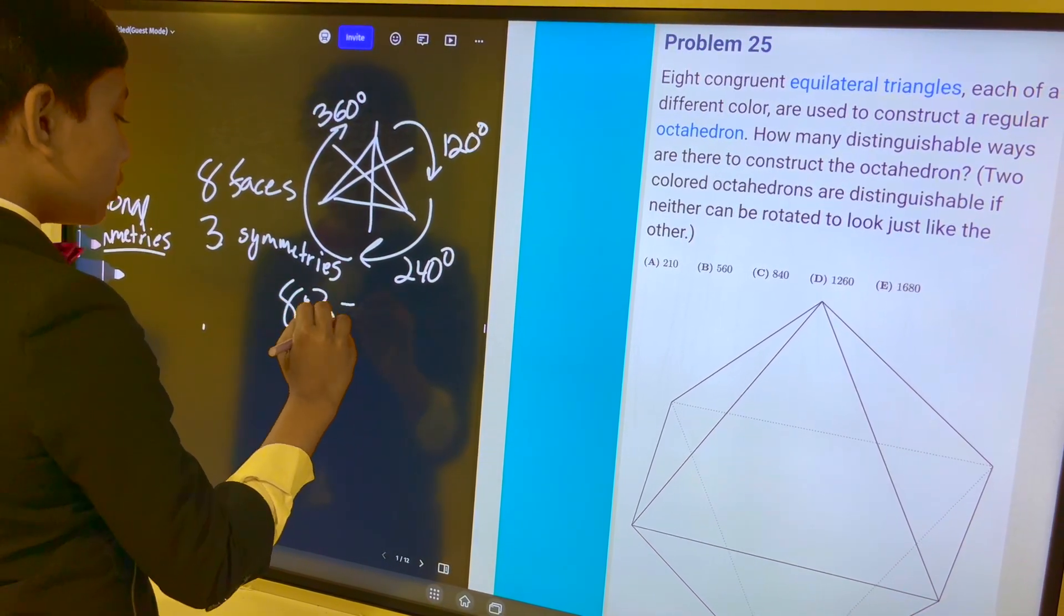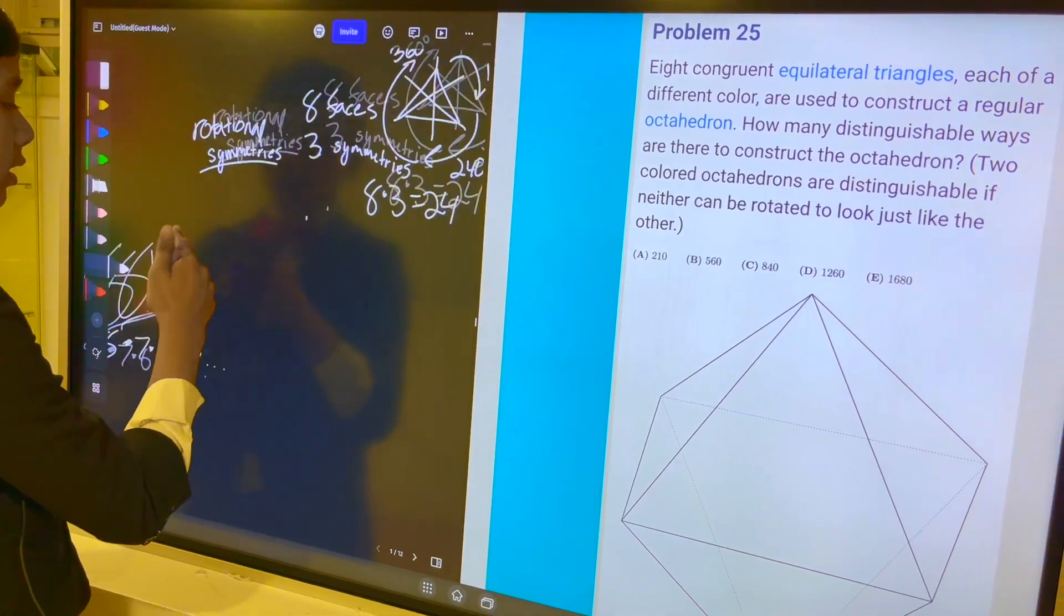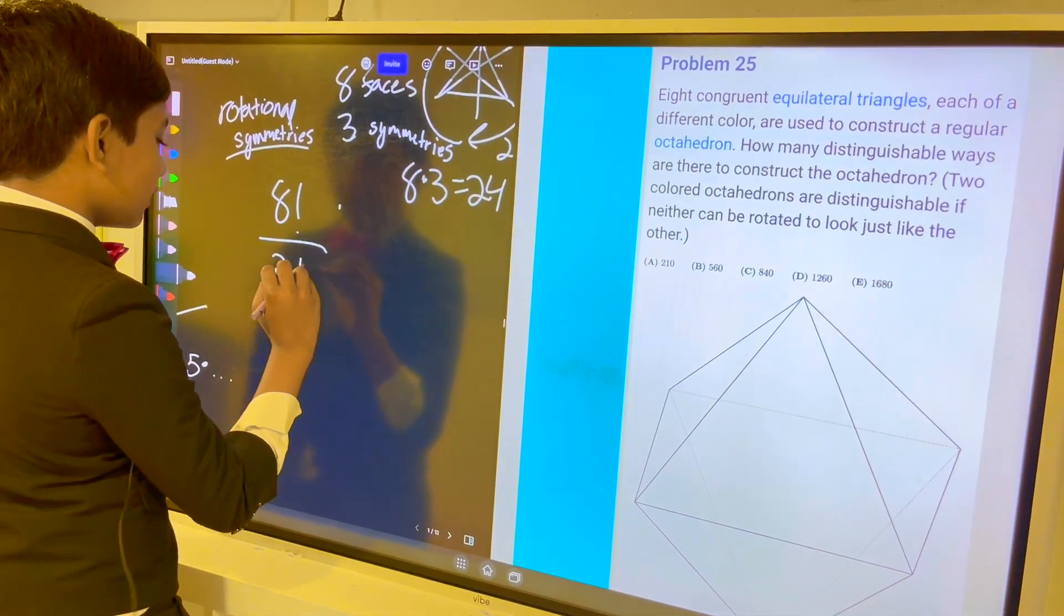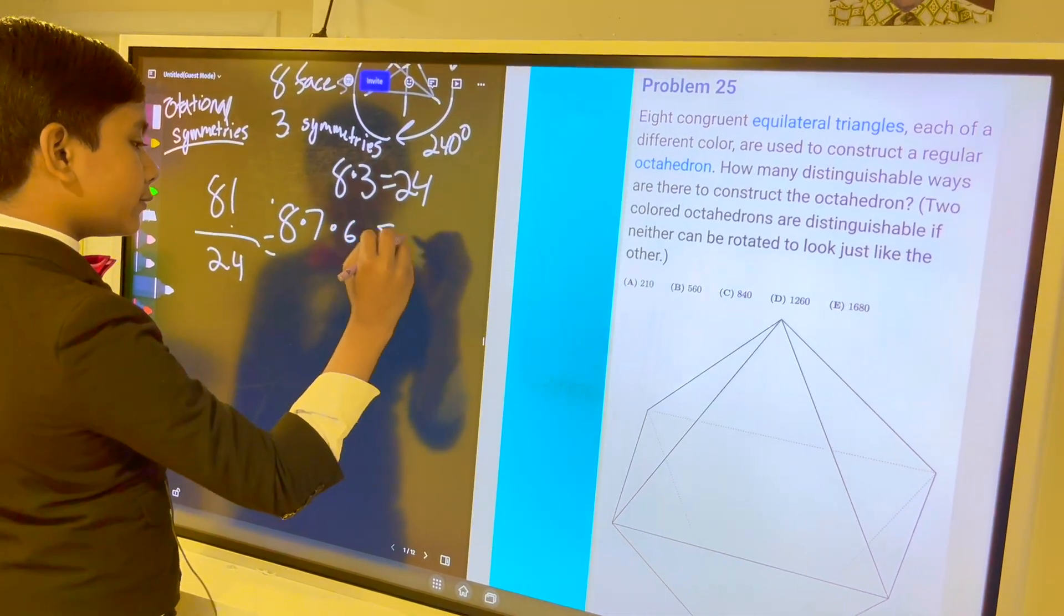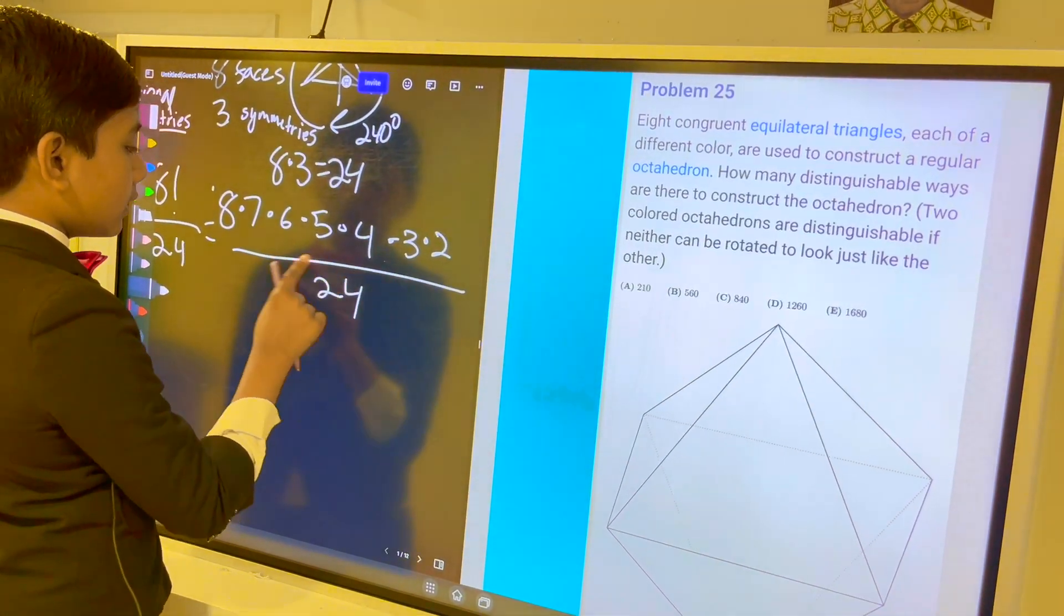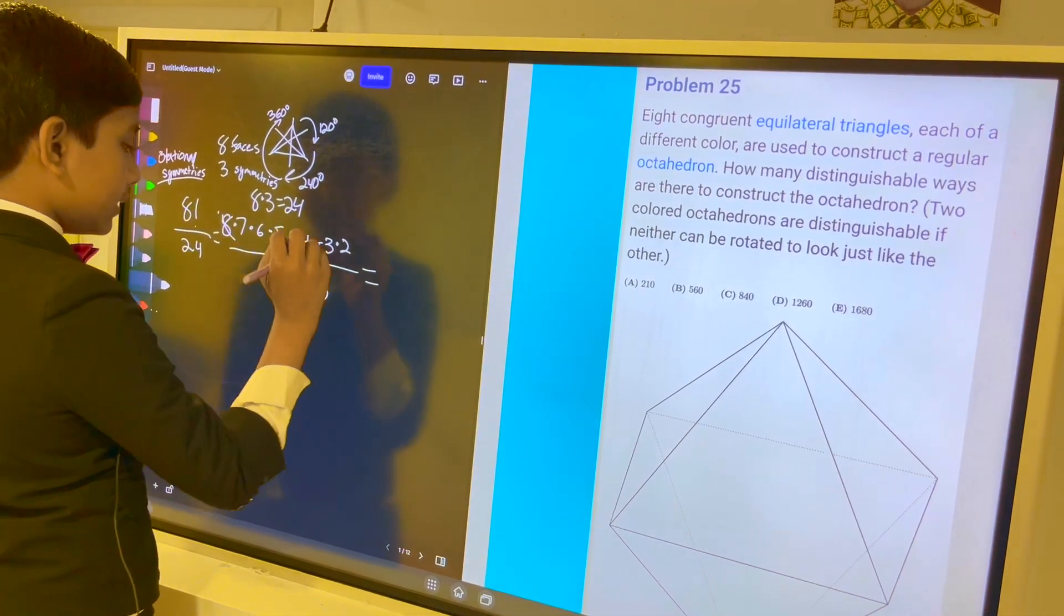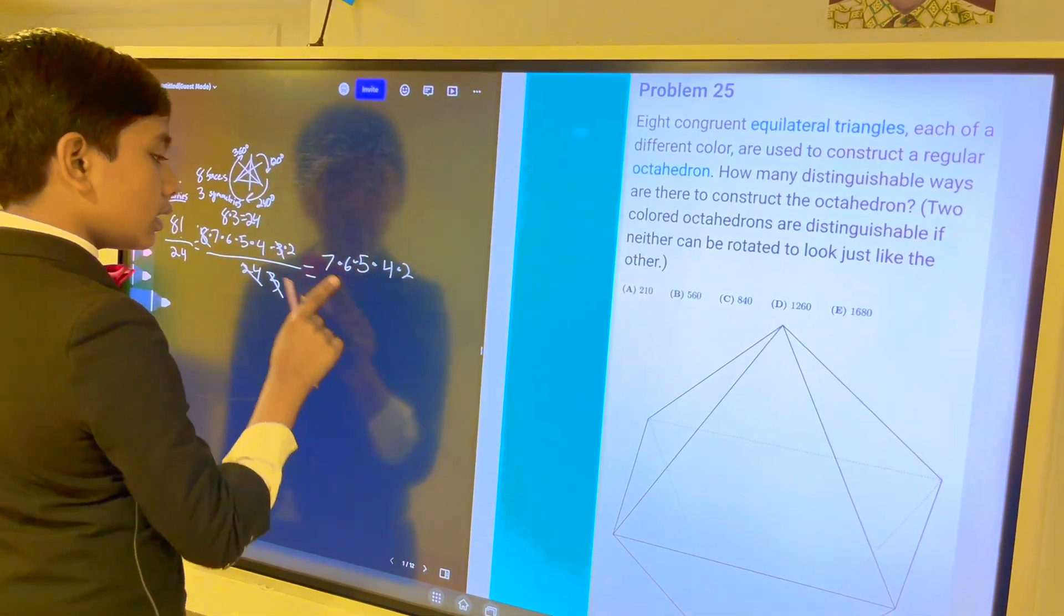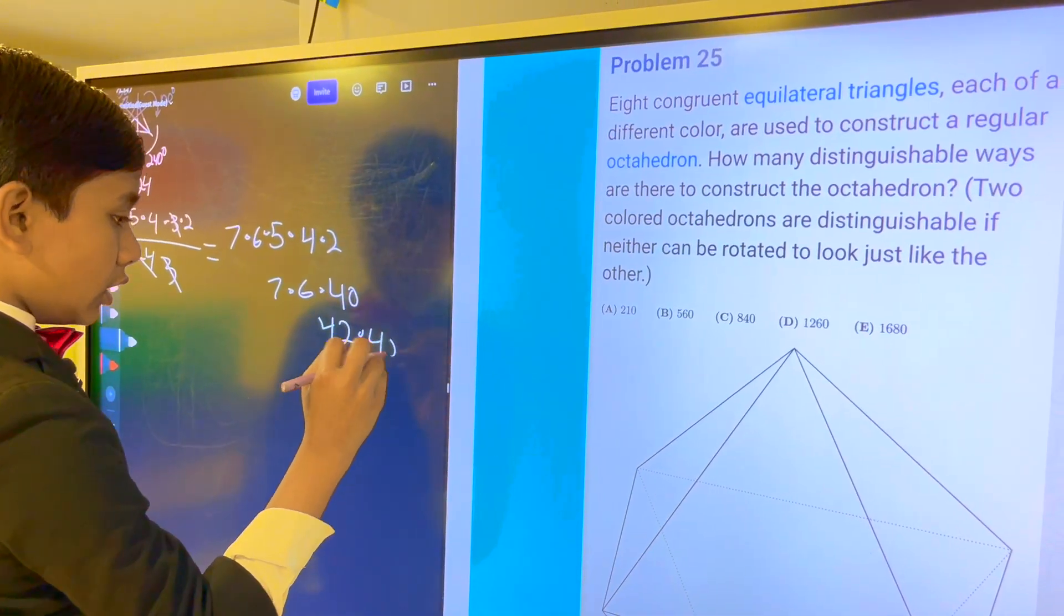Eight times three is a total of 24 distinguishable ways you can rotate the polygon, or the octahedron. Sorry, I was lagging. So, eight times seven times six times five times four times three times two over 24 is equal to... 24 becomes three, cancels out eight. So, it gives you seven times six times five times four times two, which is seven times six times 40, which is 42 times 40, or 1680.